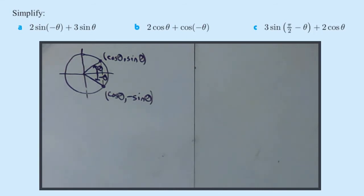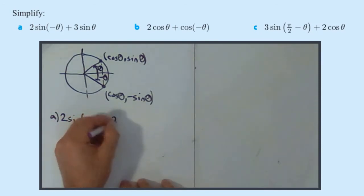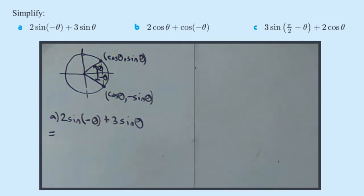OK, so now, knowing all of this, we just need to simplify some expressions. Simplify 2sin(-θ) + 3sin(θ). So that's not bad. You need to look at the sin(-θ), and we know that sin(-θ) = -sin(θ). So this becomes 2 × (-sin(θ)), which is -2sin(θ) + 3sin(θ), and then -2sin(θ) + 3sin(θ) gives you 1sin(θ), which is just sin(θ).